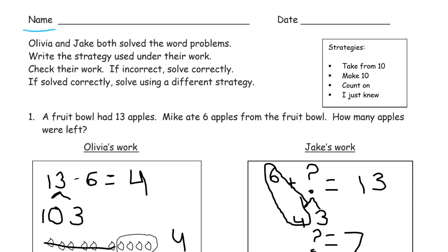Alright, so here are the strategies listed. We can take from 10. We can make 10. That's usually for addition. Take from 10 is a subtraction strategy. Making 10 to add, that's addition. Counting on. You can count on for addition or subtraction. And I just knew.